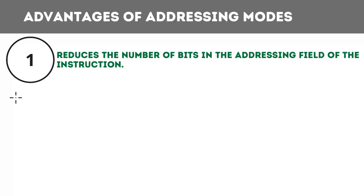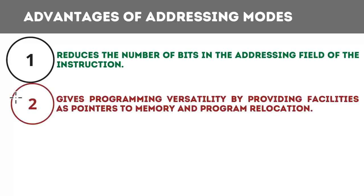The solution is provided by addressing modes. Addressing modes allow us to access a large memory within a small instruction without requiring the address field to occupy a large number of bits. This is one advantage of addressing modes: they reduce the number of bits required for the address field inside any instruction.